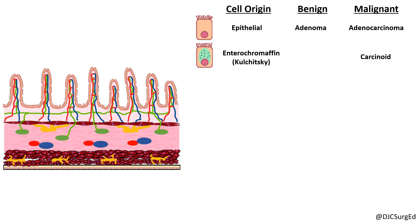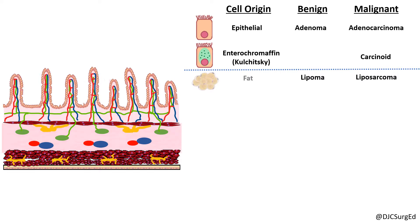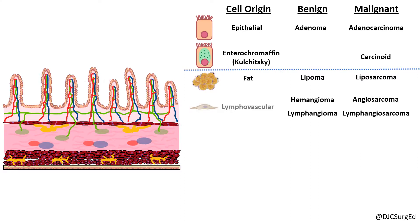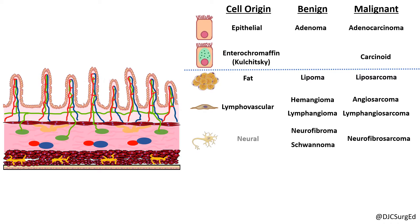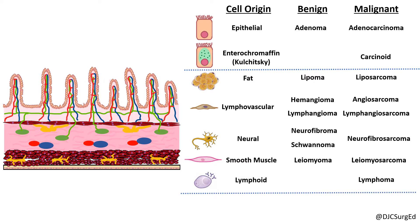Submucosal tumors can include benign lipomas or malignant liposarcomas from submucosal or even serosal fat; benign hemangiomas and lymphangiomas or malignant angiosarcomas of lymphovascular cell origin; benign neurofibromas and schwannomas and malignant neurofibrosarcomas of neural cell origin; and benign leiomyomas and malignant leiomyosarcomas of smooth muscle origin. Submucosal lymphoid aggregates can give rise to lymphoma, most predominantly of B cell origin.